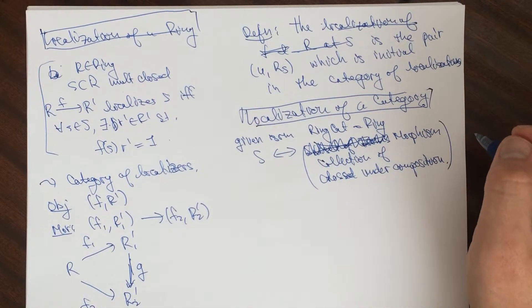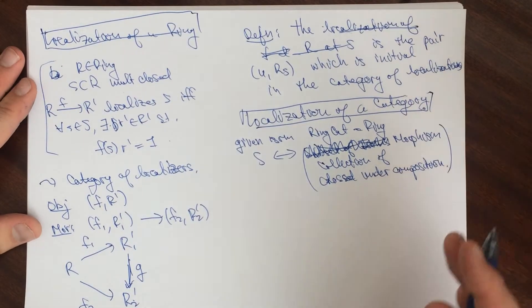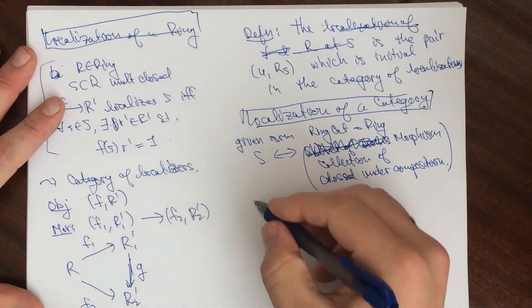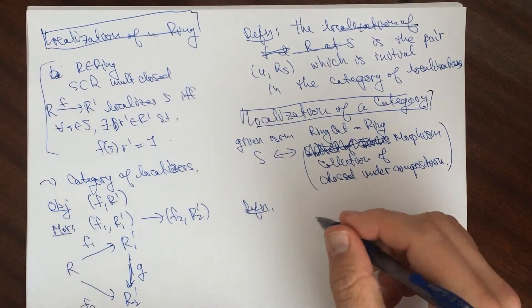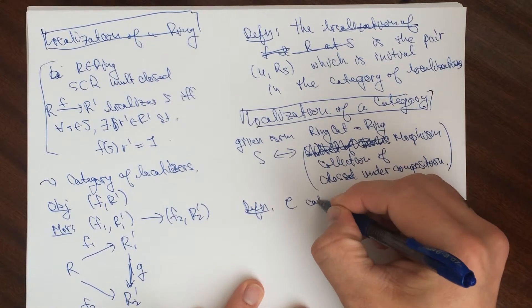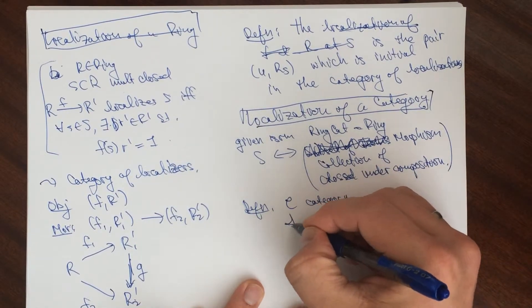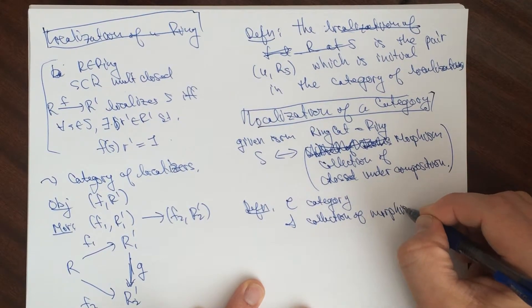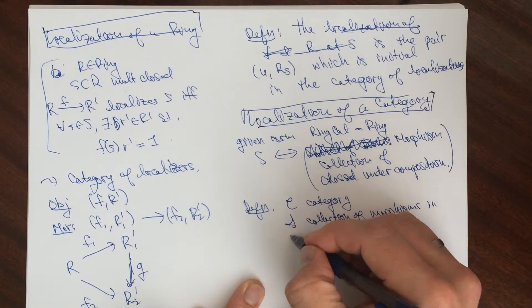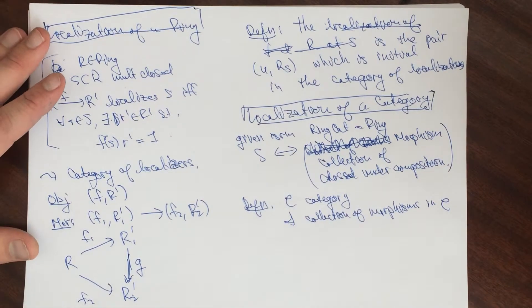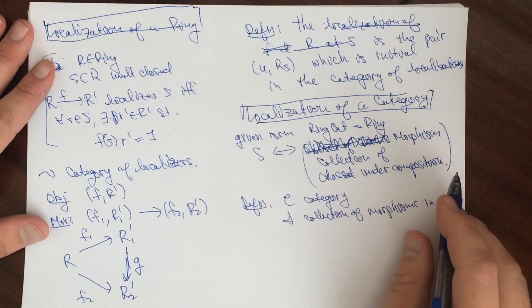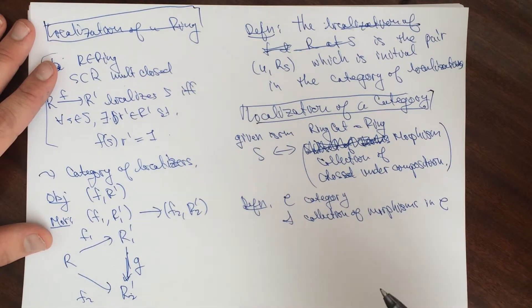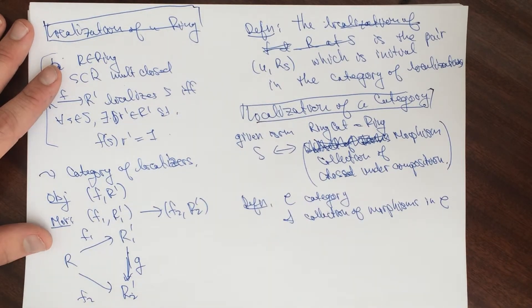Let me give you a definition. Let's say C be a category, S a collection of morphisms in C, and then we can say that it's closed under composition. We don't need to do this, but the definition will, the construction, what I'm going to do is, you might as well assume that it's closed under composition, or close it under composition.